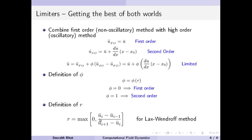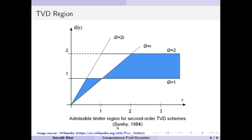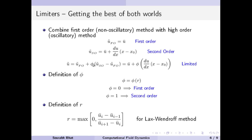When r equals 1, if we have three values u_i, u_{i-1}, and u_{i+1}, the difference on the back side equals the difference on the forward side, meaning these three points lie on a straight line. Such a distribution is a very smooth solution, and therefore we should use a second order method — that is, setting phi equal to 1.